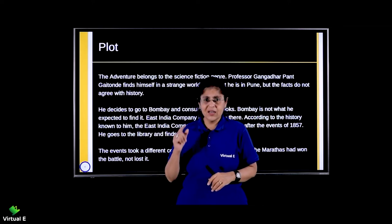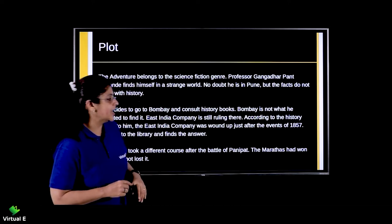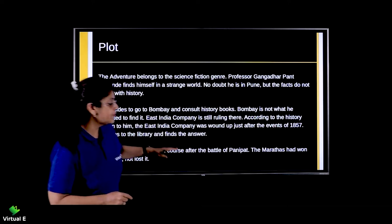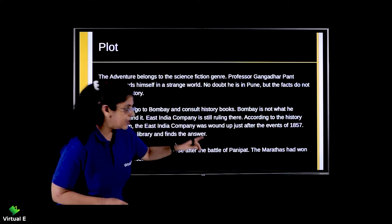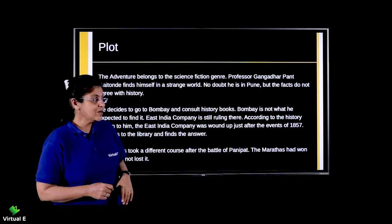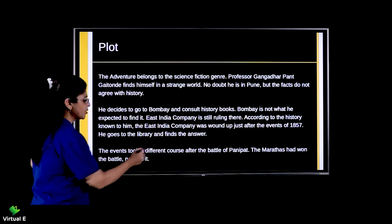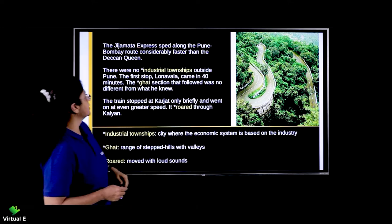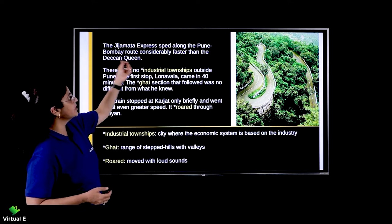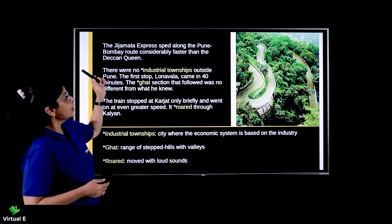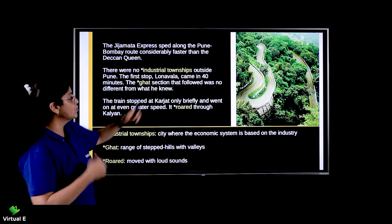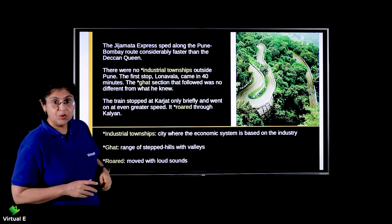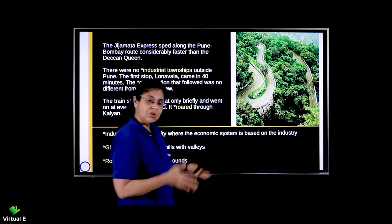The events took a different course after the Battle of Panipat — the Marathas had won the battle, not lost it. The Jijamata Express sped along the Pune-Bombay route, considerably faster than the Deccan Queen. These are names of trains. There were no industrial townships outside Pune — no city where the economic system is based on industry, which was very strange.